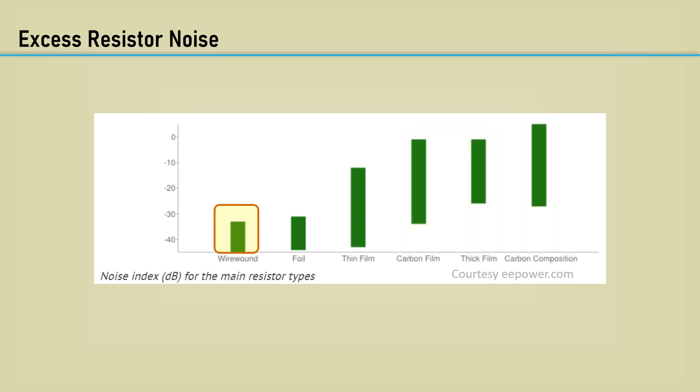Wire wound is the best, but they have a troubling amount of inductance depending on the application. Metal foil resistors are really good, but expensive. Thin film is a good practical choice for resistors in low-noise applications.